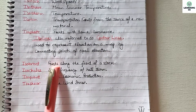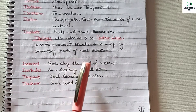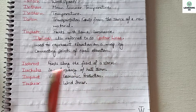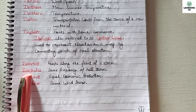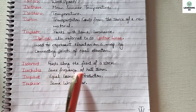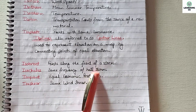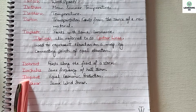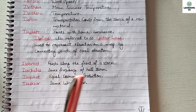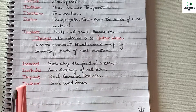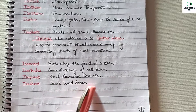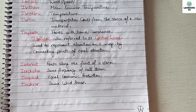Isofront: point along the front of a storm. Isochel: same frequency of hailstorm. Isoquant: equal economic production. Iso-shear: same wind shear.